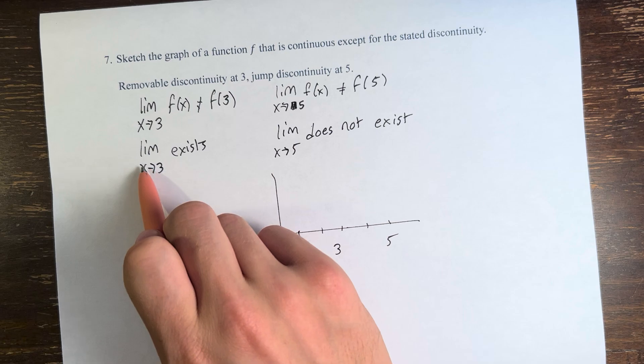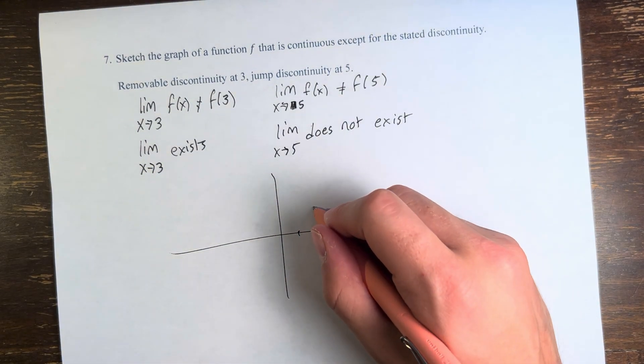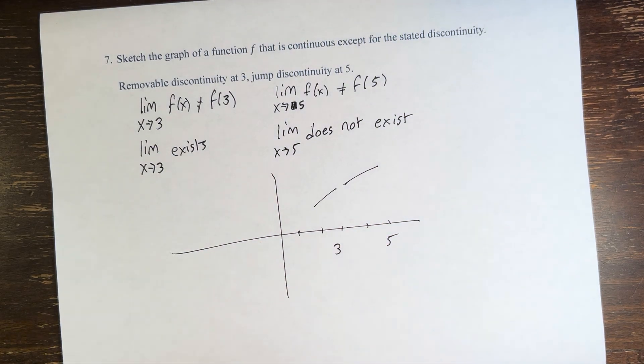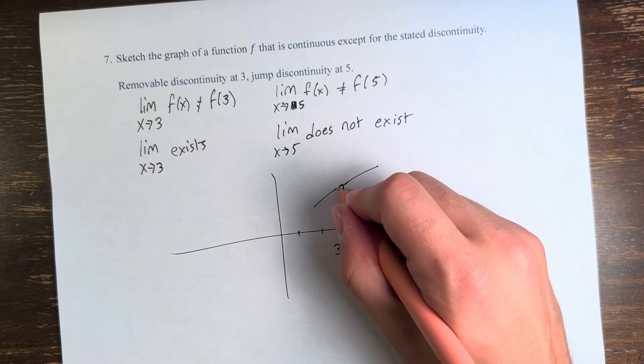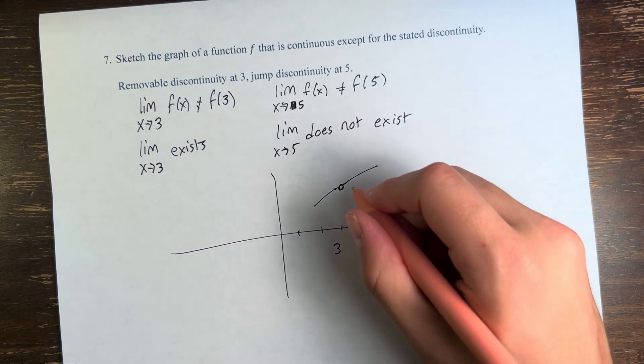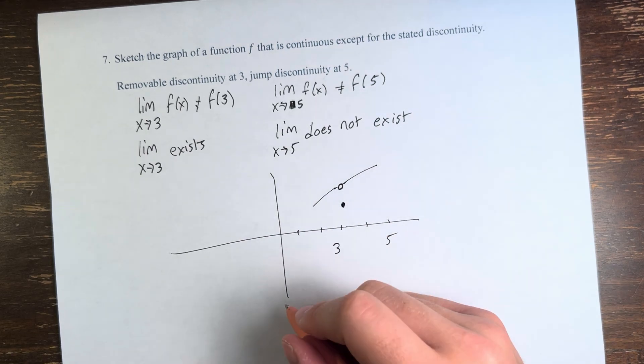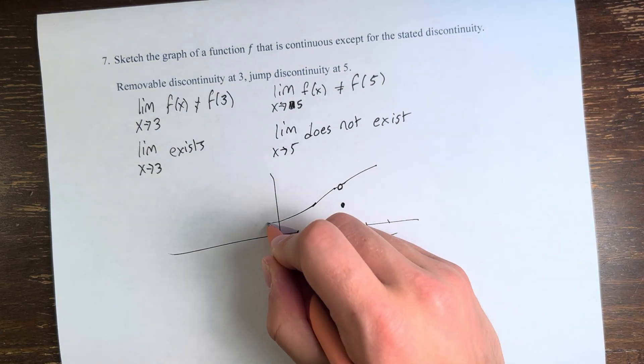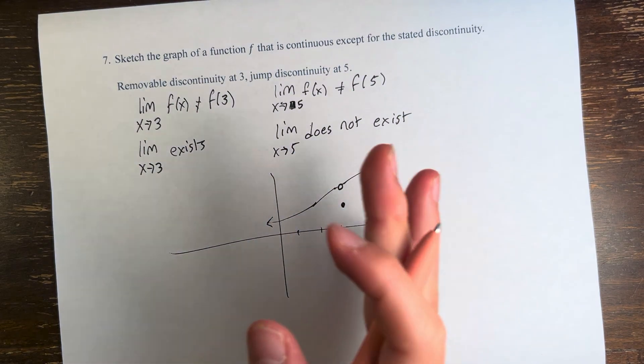At 3, the limit exists. So as we're approaching some value, we're approaching the same value from the left and the right, therefore the limit exists. However, we have an open circle here because it's not equal to the value of the function. Let's say the function is actually equal to this value down here at x equals 3. And then it just goes off to infinity that direction.